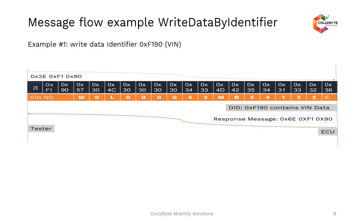Here is an example of write data by identifier: writing a VIN number into the ECU. The request starts with 0x2E, followed by F1 90 — the data identifier for the VIN number, predefined in the document. Following this VIN data identifier, we have 17 bytes of data which have to be sent from the diagnostic tester to the ECU.